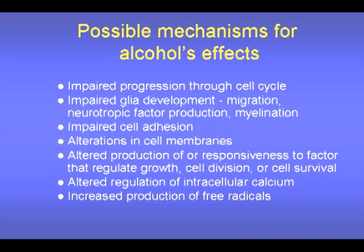Prenatal alcohol can also act on intracellular messengers. For example, alcohol can decrease or increase intracellular calcium. An optimal level of intracellular calcium is necessary for normal outgrowth of neuronal fibers. Yet, despite this multitude of possible mechanisms, not all neuronal cell populations are equally affected by prenatal alcohol. One of the challenges for alcohol researchers is to determine why some cells are resistant whereas others are relatively vulnerable to prenatal alcohol.